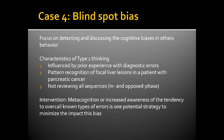This is an example of blind spot bias — when we focus on detecting cognitive biases in others' behavior. The radiologist, knowing that liver metastases are frequently missed, incorrectly assumes the undescribed lesions represent metastases. The Type 1 thinking characteristics include being influenced by prior experience with diagnostic errors, pattern recognition of focal liver lesions in a patient with pancreatic cancer, and not reviewing all sequences in a systematic fashion. Increased awareness of the tendency to over-call known types of errors is one potential strategy to minimize the impact of this bias.